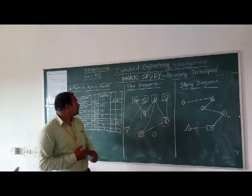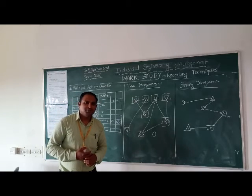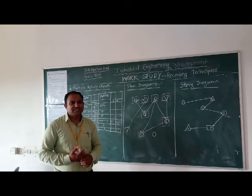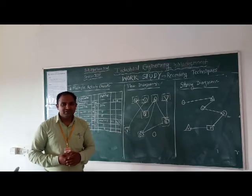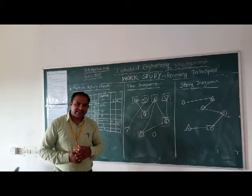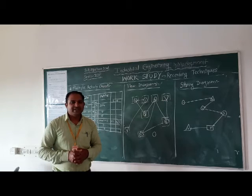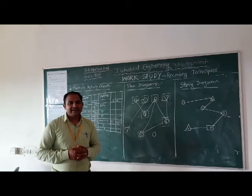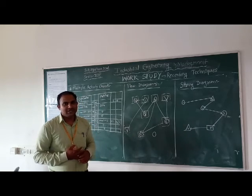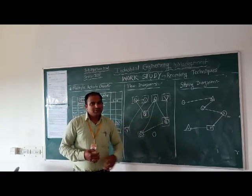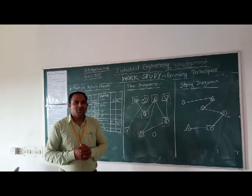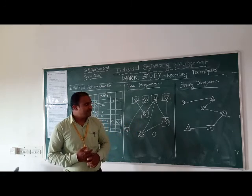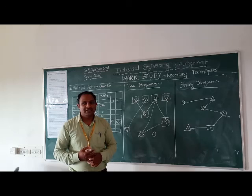So in this video we studied the multiple activity chart, which is an advance of the operation process chart. It does not use various activity symbols like operations, storage, or delay — only two symbols: hatching lines inside a rectangle to indicate actual engagement of workers or machines, and an empty rectangle to show an idle or waiting condition. In the flow diagram, direction is indicated by arrows showing positions of various activities, and in the string diagram, a known length of string is used.